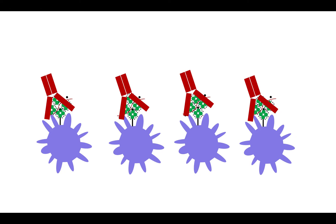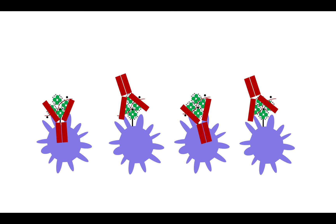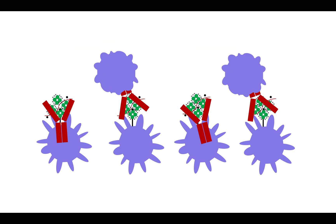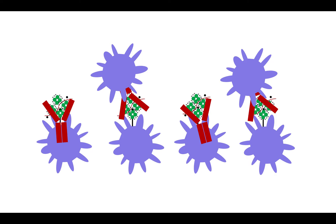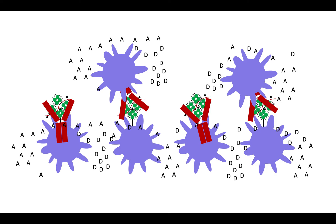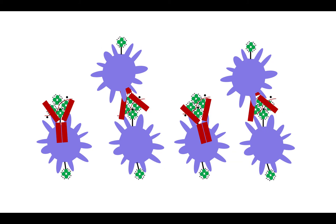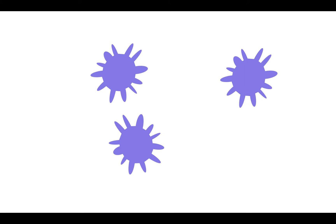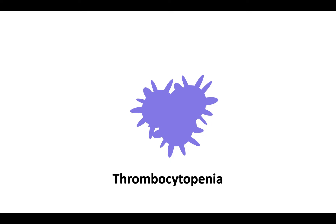Platelets have FC receptors that recognize and capture the FC region of the bound antibody. Neighboring platelets also recognize and bind the FC region and become activated. Once activated, they secrete their alpha and dense granules and hence additional PF4. The release of additional PF4 creates more antigenic substrate for HIT antibodies. IgG-coated platelets are removed from circulation by macrophages, and the remaining platelets get consumed in the formation of microthrombi. Both platelet clearance and microthrombi formation lead to the clinical finding of thrombocytopenia.